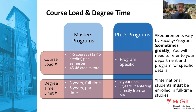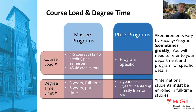You have a degree time limit: three years for full-time studies in a master's program, or five years part-time. Note that international students must be enrolled full-time. For doctoral programs, the course load is extremely program-specific. It is normal for doctoral programs to have you take courses in the first year or two before transitioning into your research or thesis writing proper. The degree time limit for doctoral programs is seven years, or six years if you're coming directly from a master's program.